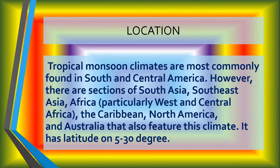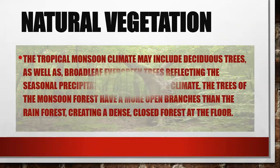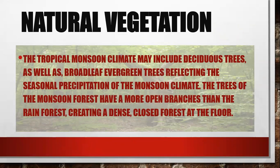Now to further present, I would like to talk about natural vegetation. The tropical monsoon climate may include deciduous trees as well as broad-leaf evergreen trees, reflecting the seasonal precipitation of the monsoon climate. The trees of the monsoon forest have a more open branch structure than the rainforest, creating a dense closed forest at the canopy.